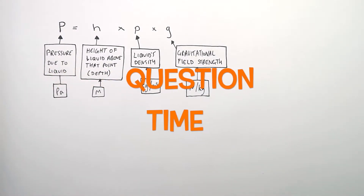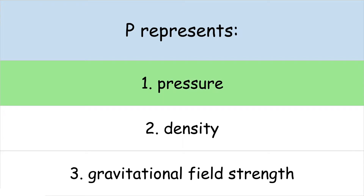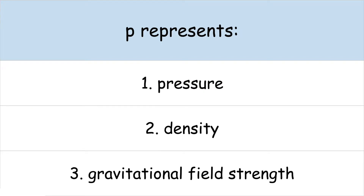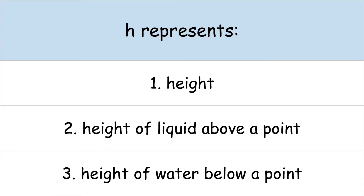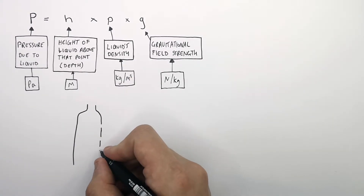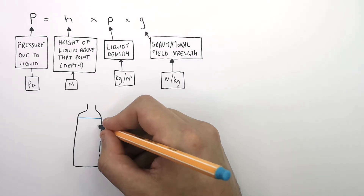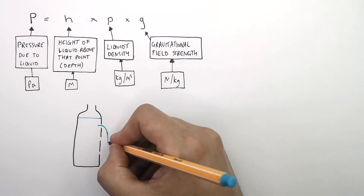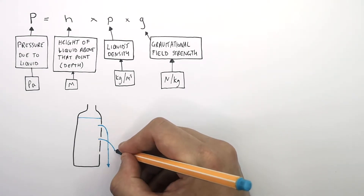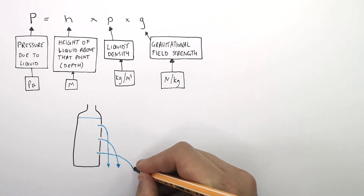It's question time. Attempt these questions to check your understanding. We have different sizes of holes at ground level and we fill the bottle with water. The water spurting out of the top hole spurts with a lower force and therefore lower pressure than the hole below it, which spurts with a higher force and higher pressure, and the bottom hole spurts with an even higher pressure so it spurts further.